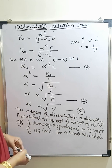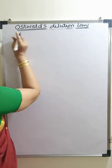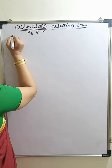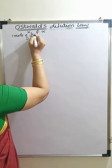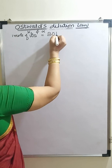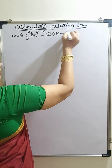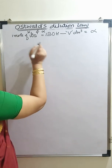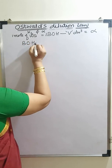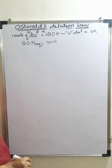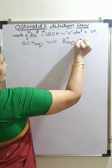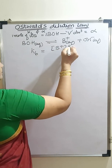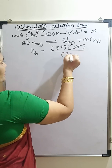Now let us see the same Ostwald's dilution law for a weak base — the relation between Kb and alpha. I will consider 1 mole of weak base BOH, dissolved in V dm³ of the solvent, and let alpha be the degree of dissociation. BOH aqueous, with the reversibility sign because it is a weak base, gives B⁺ aqueous and OH⁻ aqueous.